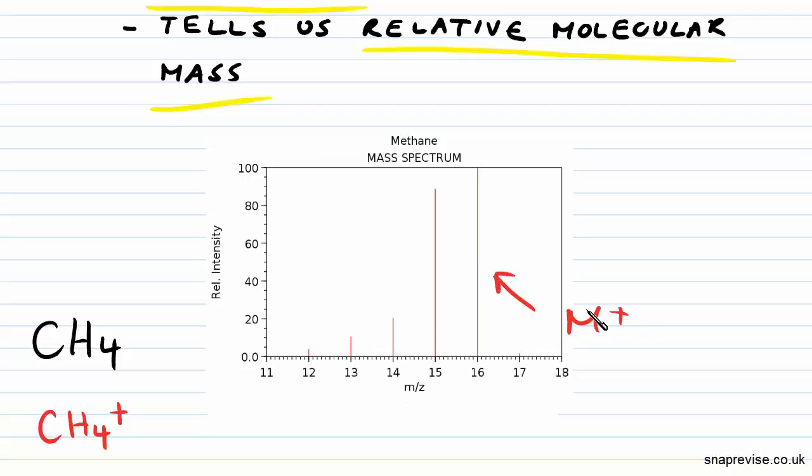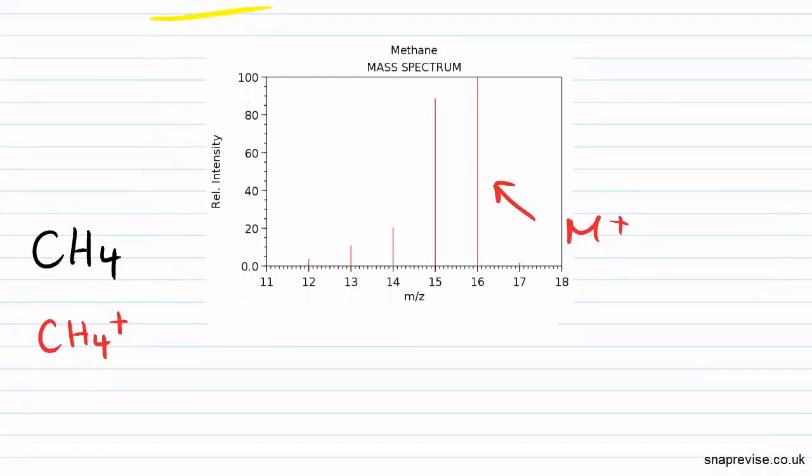is our M+ peak. And that makes sense because if we were to work out the molecular mass of methane from first principles, we've got one carbon which has a molecular mass of 12, and we have four hydrogens, each with a molecular mass of one, which would give us 16. So you can see how we can use mass spectrum to identify the molecular mass.